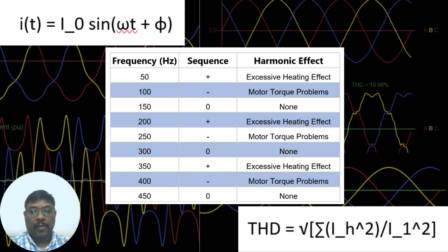The third harmonic, 150 hertz, is a zero sequence present in the neutral circuits. The fourth harmonic, 200 hertz, can produce excessive heating because it's a positive sequence effect.